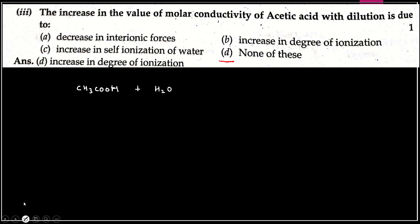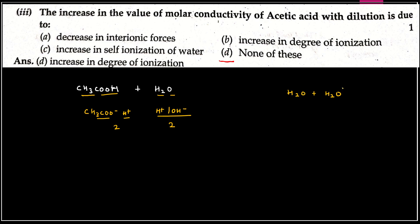Second option: increase in degree of ionization — degree of ionization ko increase karne ke liye bilkul sahi. Yahan pe H+ positive hai aur CH3COO- negative hai; agar dilution kar denge to aur ions aa jayenge. Third option: increase in self-ionization of water — nahi, kyunki humne CH3COOH ko water mein mix kiya hai, self-ionization of water nahi. Therefore, correct answer is option B — increase in degree of ionization. Clear hai beta.